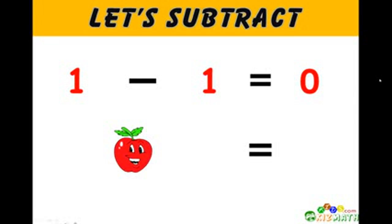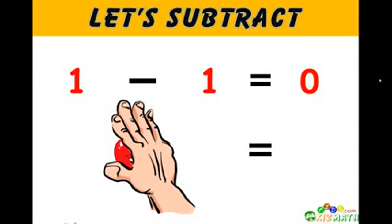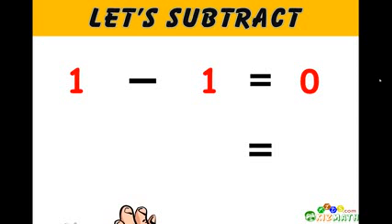Let's subtract. One minus one equals zero. If we have one apple and we take away that one apple, we have zero apples left.